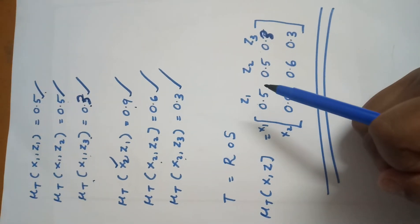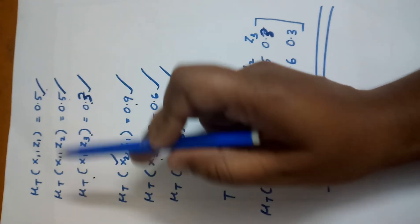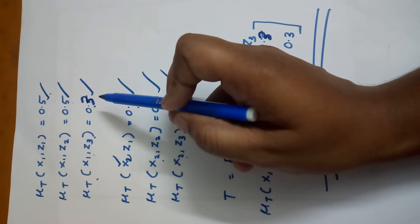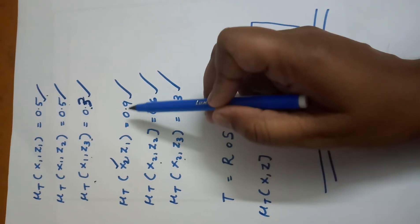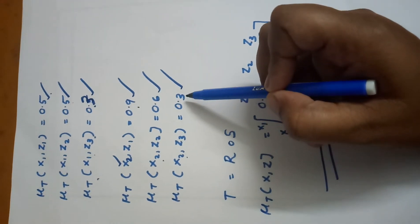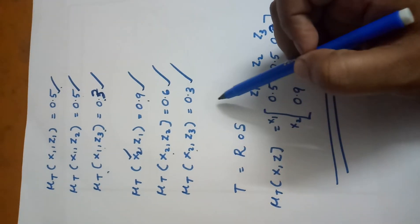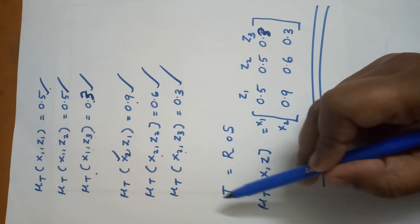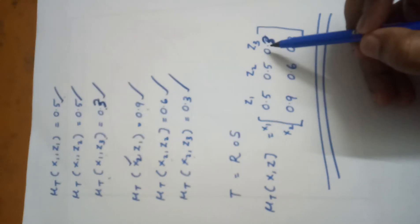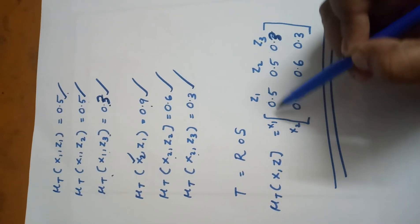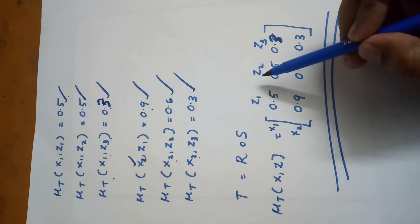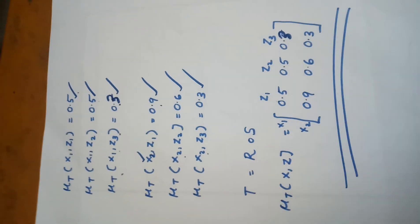We calculate all matrix values: μT(x1,z1) = 0.5, μT(x1,z2) = 0.5, μT(x1,z3) = 0.3, μT(x2,z1) = 0.9, μT(x2,z2) = 0.6, μT(x2,z3) = 0.3. Finally, we represent these values in matrix form: the final relation T = R ∘ S = [[0.5, 0.5, 0.3], [0.9, 0.6, 0.3]].